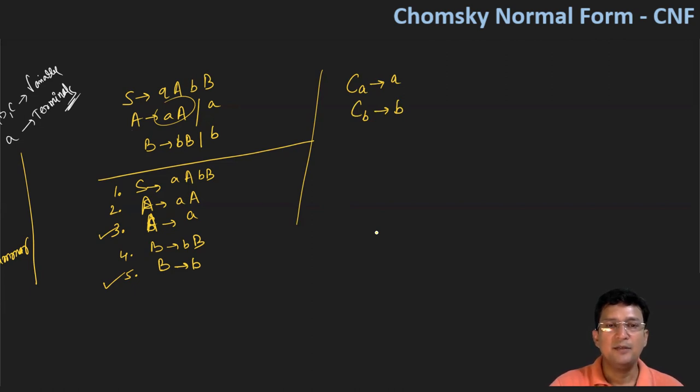Now after this, we rewrite production number one. So production number one says that S produces small a, we have changed small a to CA, and capital A, then CB and capital B. Similarly A has been changed, this is CA and capital A. Then the third number production we had, we will write it as is because it's already in CNF, Chomsky normal form. Fourth number production we have rewritten, we are writing it as CB, B. And then B produces small b is already written in CNF.